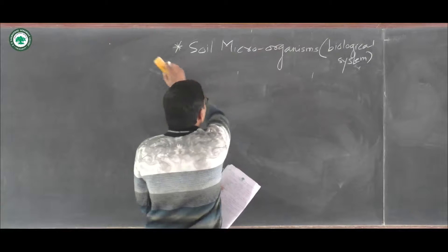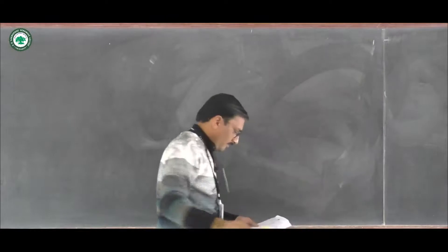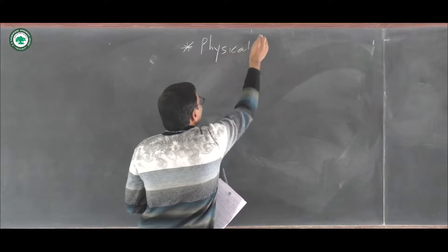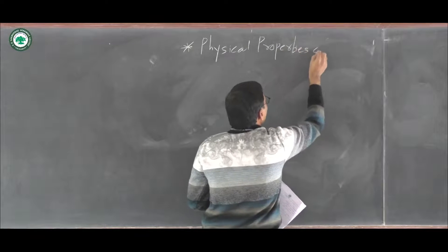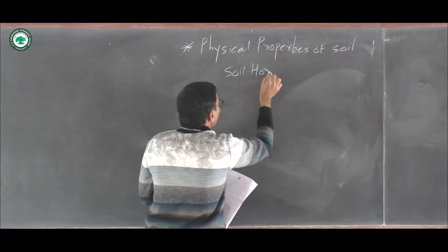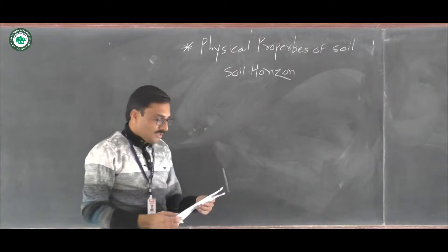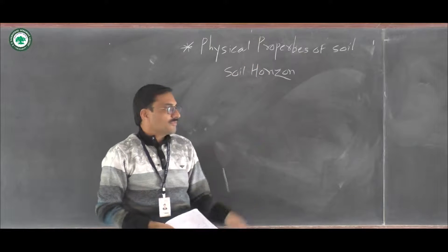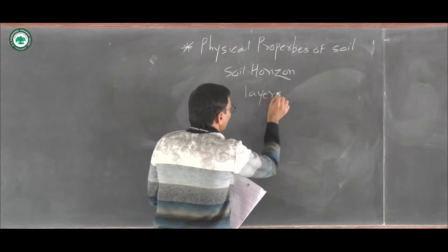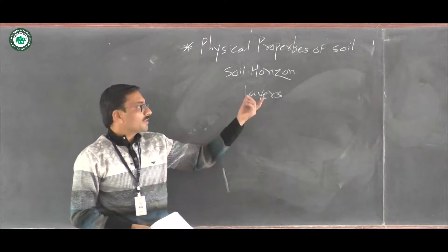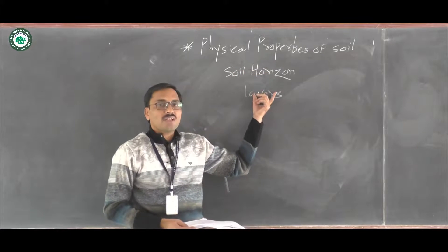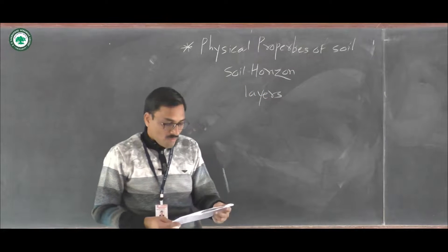The next point is physical properties of soil. Under physical properties, we will see soil horizon. During the formation of soil, there is development of different types of layers, and those layers are called soil horizons. So soil horizons are nothing but different types of layers that are generated during the formation of soil.